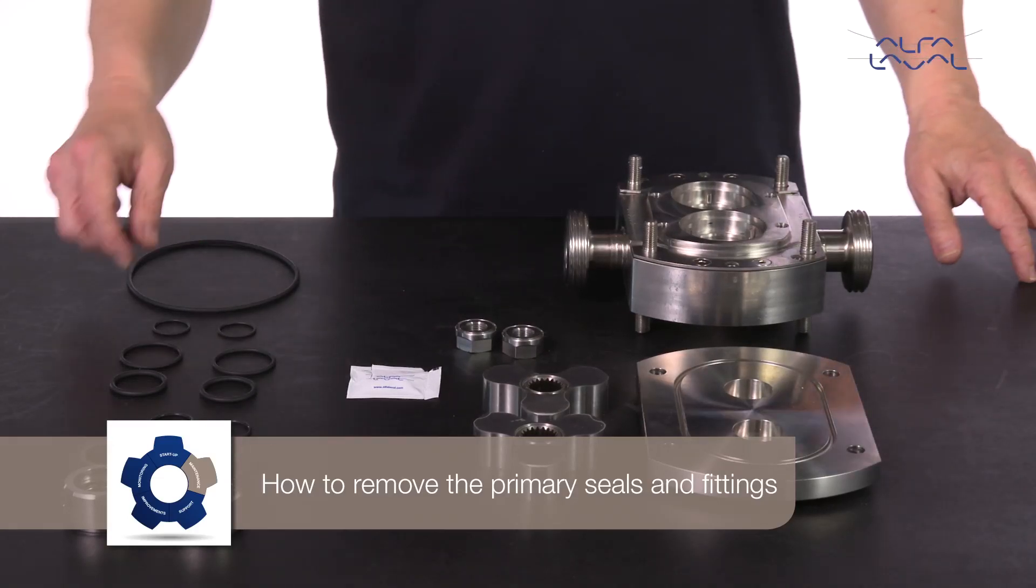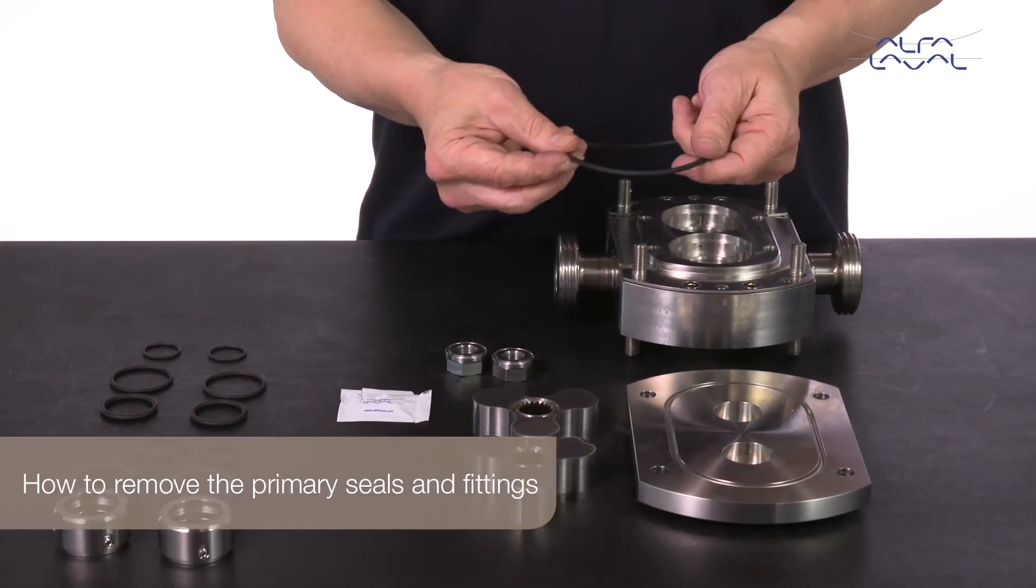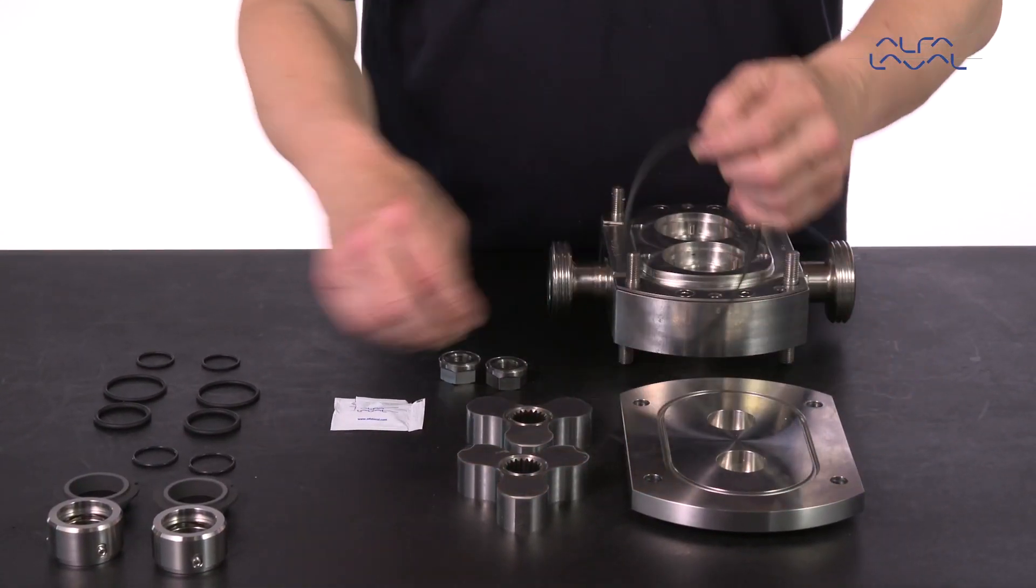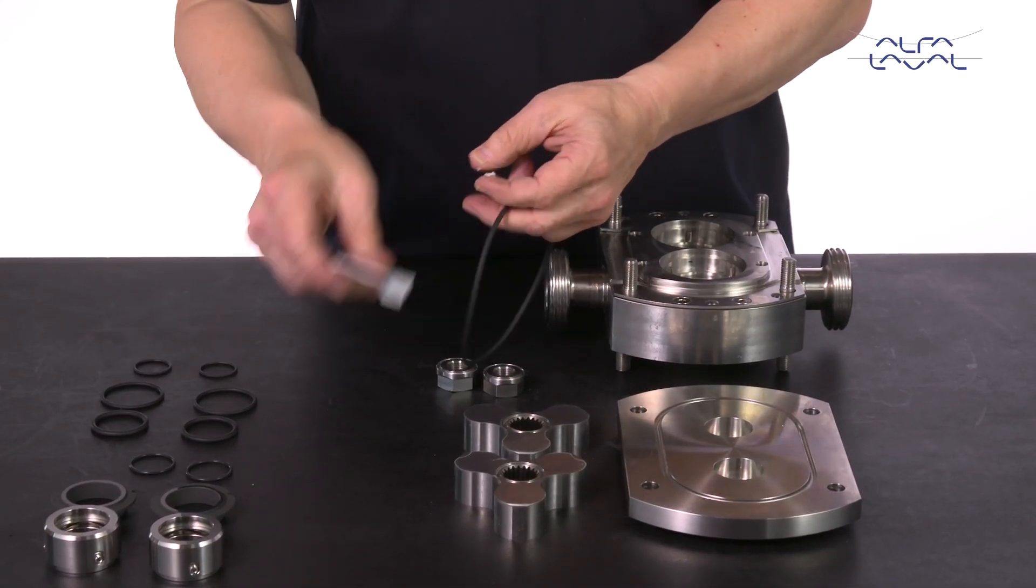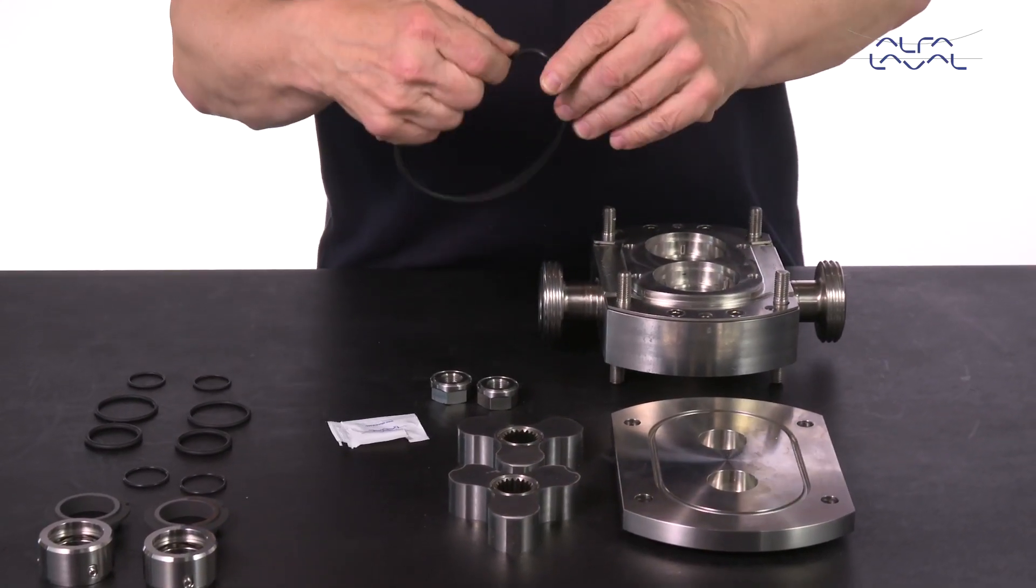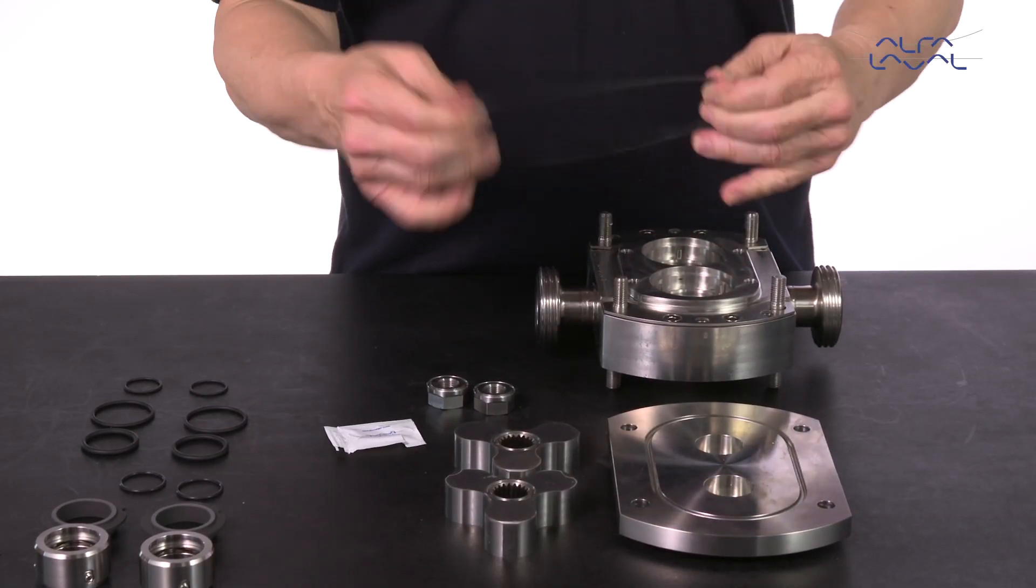How to remove the primary seals and fittings. After dismantling the pump and removing all product wetted seals, it's time to replace the seals. First, replace the O-ring on the rotor case. Remember to lubricate the new O-ring.